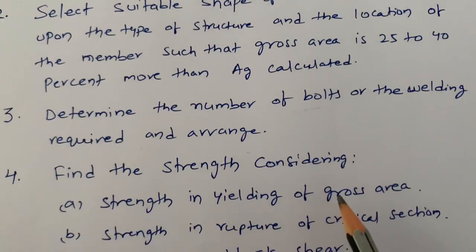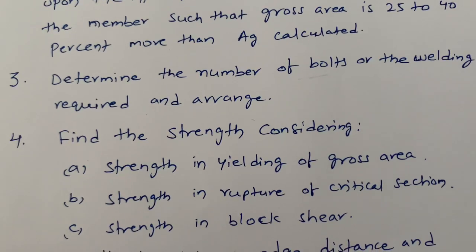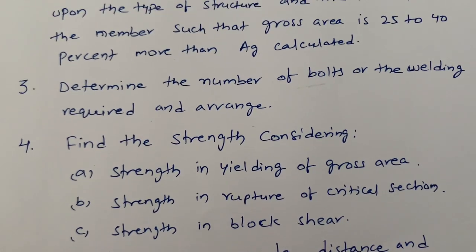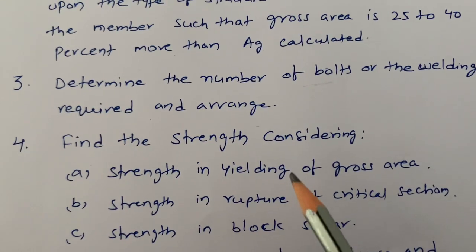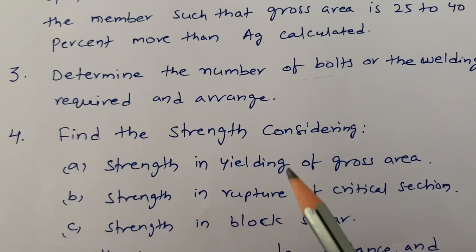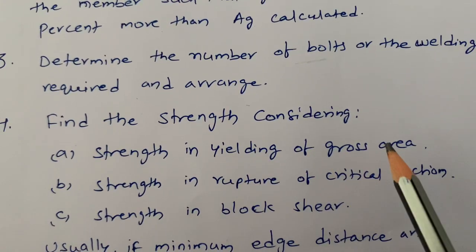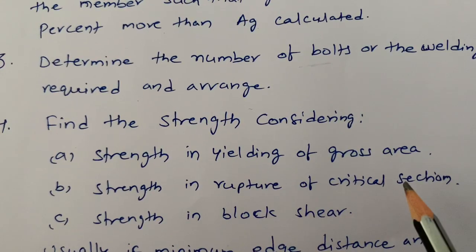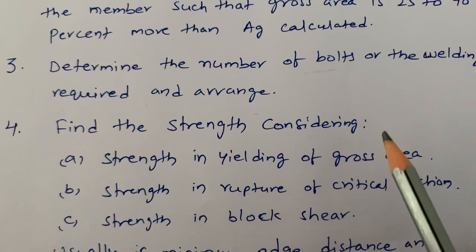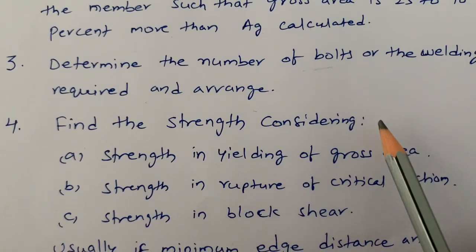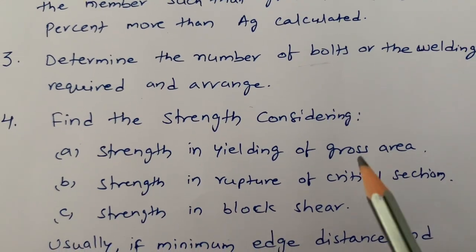Next, we need to find the strength by considering the three types of failures in tension members, as I explained in my previous video. The three types of strengths are: strength in yielding of gross area, strength in rupture of the critical section, and strength in block shear. These are specified in IS 800:2007, Section 6.